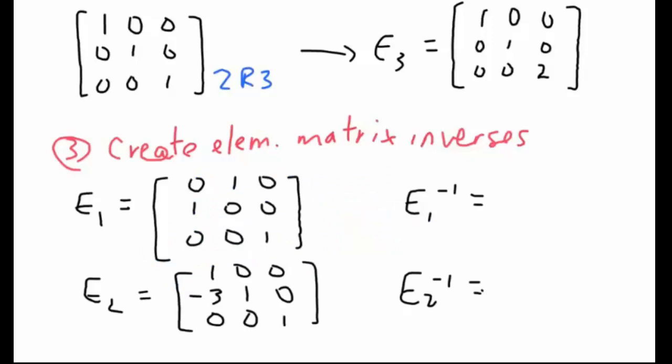So take a look at E1. What type of elementary matrix is this? Well, E1 represents a switch of two rows. And that means that E1 inverse is going to be the same thing as E1.